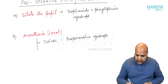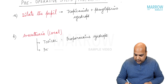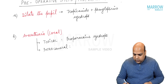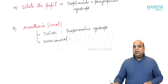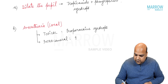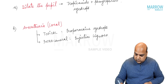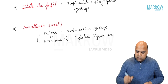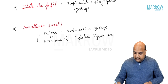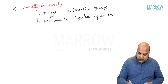Anesthesia can also be given intracamerally. When you are giving topical anesthesia, sometimes you need to augment it with intracameral anesthesia, so you can give an intracameral injection of lignocaine. Basically both of them are used together.